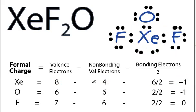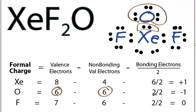For the Oxygen, group six, six valence electrons. We have six non-bonding valence electrons and two involved in a bond, two divided by two. Six minus six minus one gives us minus one for the Oxygen.